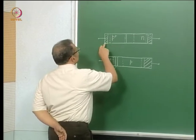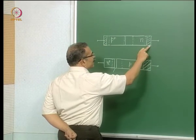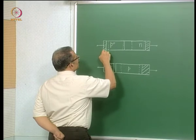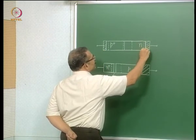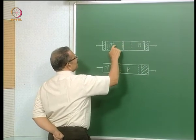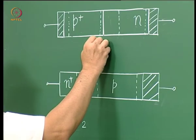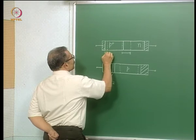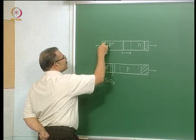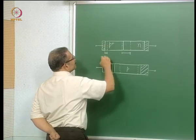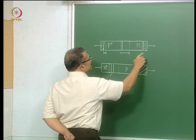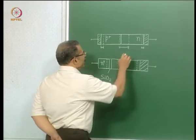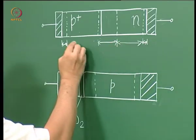For a pn junction with ohmic contacts at the left and right ends: junctions are located between the contact and the p-plus region, between the contact and the n region, and between the p-plus and n regions. There is a space charge region near the pn junction, space charge regions near the ohmic contacts, and the region inside metal contacts is very thin. Between the space charge regions you have neutral regions.